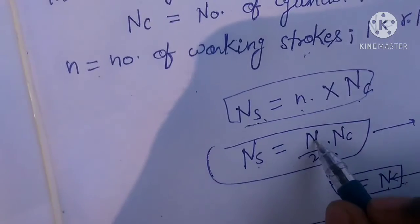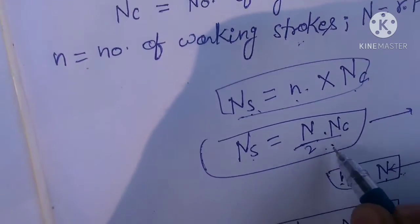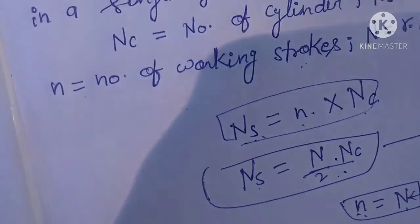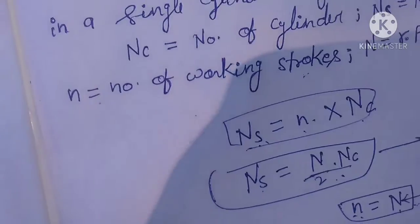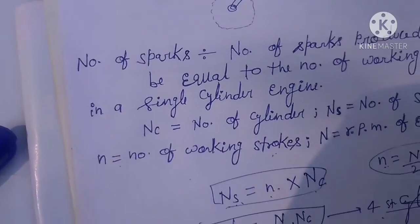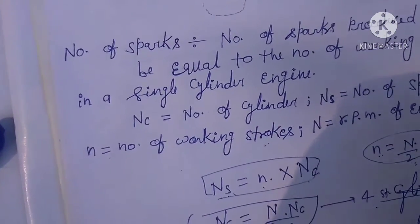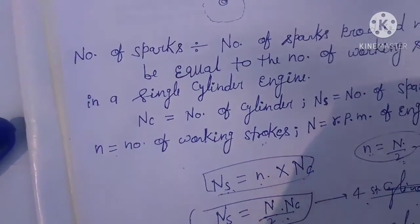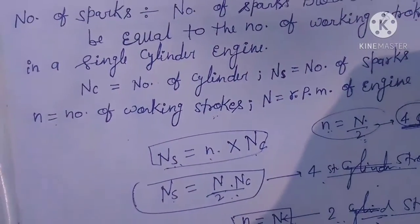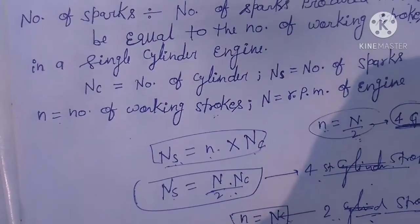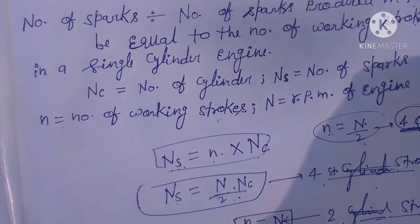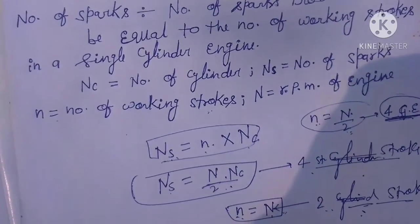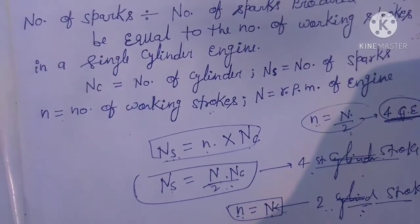So the final formulas are: ns equals N multiplied by nc for a two-stroke engine, and ns equals (N/2) multiplied by nc for a four-stroke engine. Use these equations to calculate the number of sparks. In the next video, we will give simple questions. Thank you.